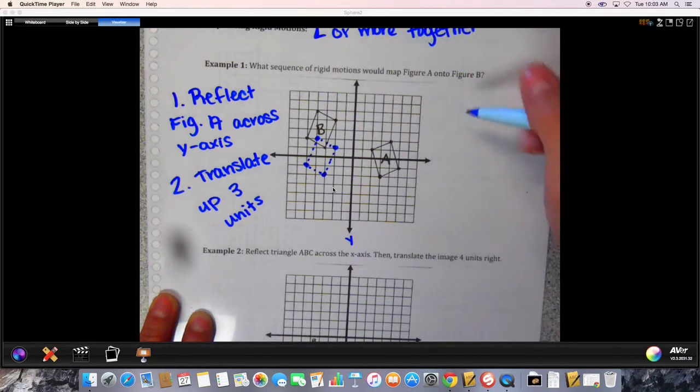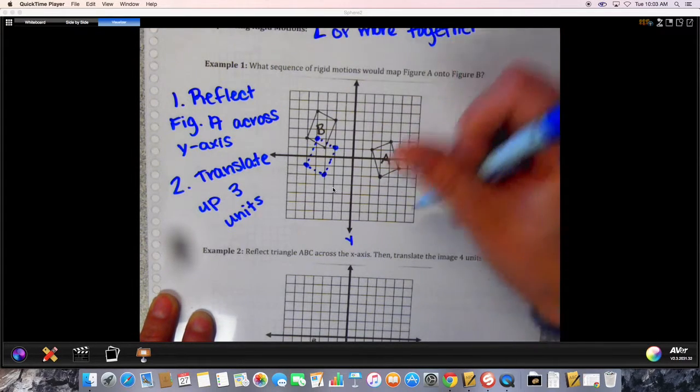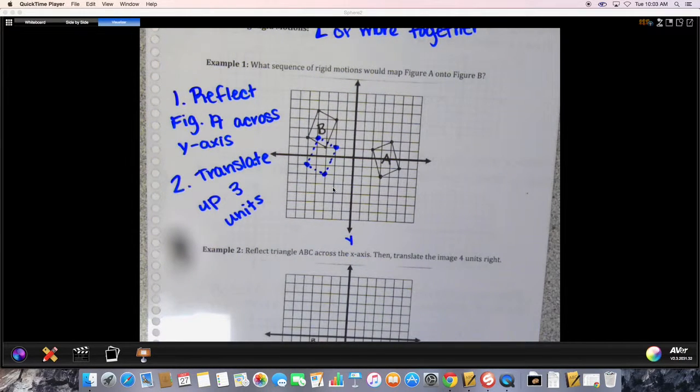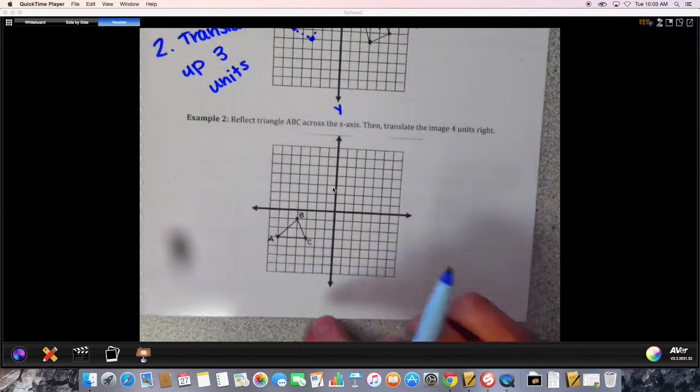This right here is called a sequence. So one and two together is a sequence of rigid motions. That's the first thing you have to do - to be able to identify the sequence. Now you don't always have to draw it in like I did, but this is our note so I thought we'll draw it right here so that you can actually see it. But if you can do this visually in your head, that's fine.